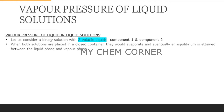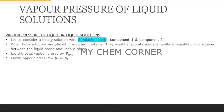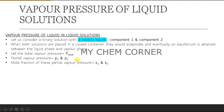At equilibrium, the liquid phase and vapor phase are balanced — there is no further change, and the reaction no longer moves forward. At that point, the total vapor pressure is called p-total, and each individual component has its own partial pressure, named p1 and p2. Each component also has a mole fraction, given as x1 and x2.